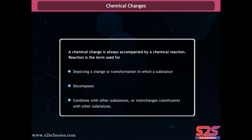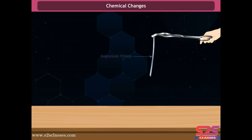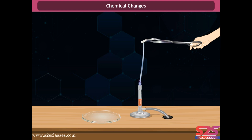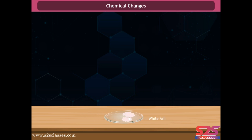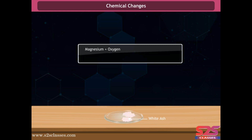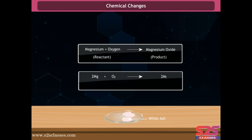To understand a chemical change, take a magnesium ribbon and hold it at an appropriate height over a Bunsen burner with the help of a pair of tongs. You will observe that the magnesium ribbon starts burning. Collect the ashes in a watch glass. The magnesium ribbon burns with a white flame and changes into white powder. This white powder is magnesium oxide, formed as a result of a chemical reaction between magnesium ribbon and oxygen present in the air.